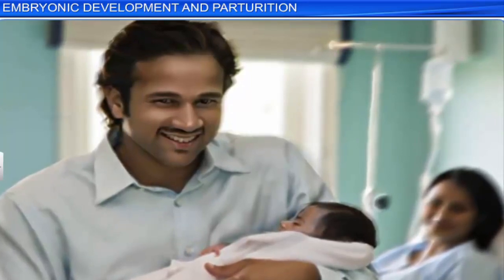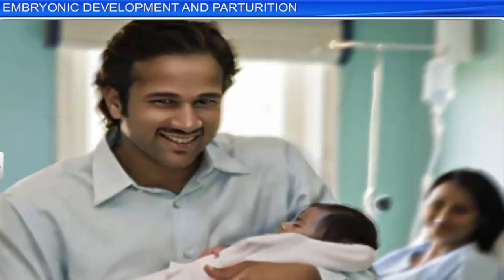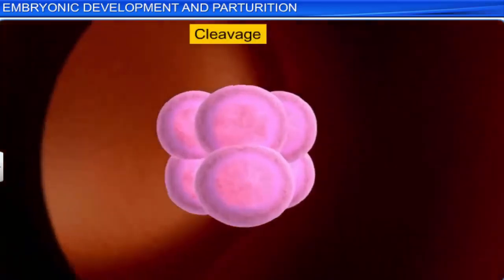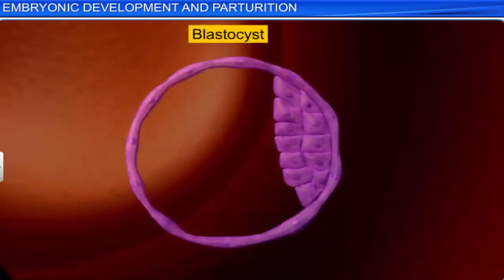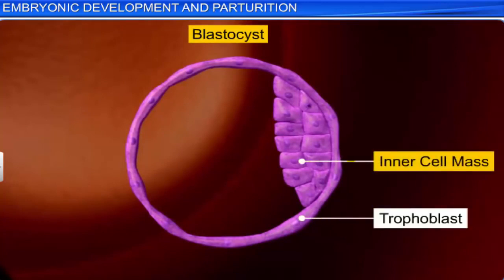The birth of a baby is an intricate and complex process that begins when the zygote undergoes cleavage and develops into a blastocyst — a hollow ball consisting of a trophoblast, an inner cell mass, and a cavity called blastocele.